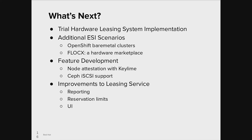So what's next? Well, we're working towards the trial implementation of our hardware leasing system in the MOC, with just one key feature missing. There are other scenarios where we might use ESI. A Red Hat colleague working on OpenShift thinks that ESI would be perfect for creating OpenShift bare-metal clusters that can expand and shrink on demand. There's also FlockX, a PhD project at BU — a hardware marketplace where users can buy and sell use of bare-metal nodes. We also have some feature development to do. We've already started to look at node attestation with Keylime. The MOC also needs Ceph iSCSI support in OpenStack for its hardware leasing system, and there's an upstream patch we'll be testing out. Then there are improvements to the leasing service: reporting, reservation limits, so that one user can't lease all the nodes until the end of time, and a UI.